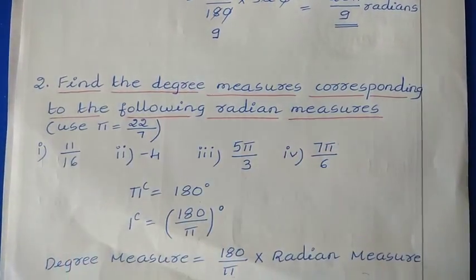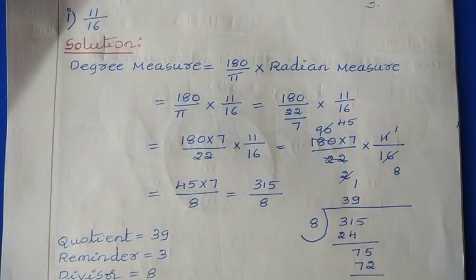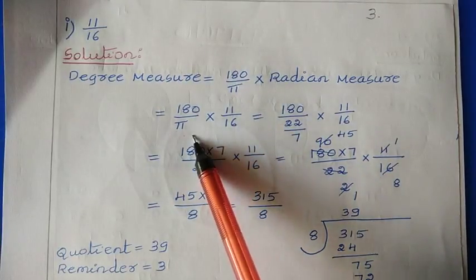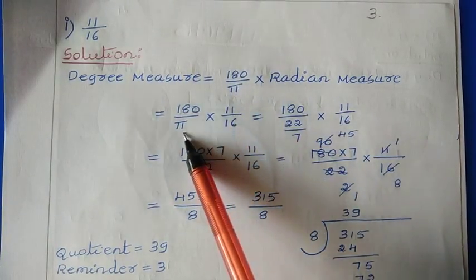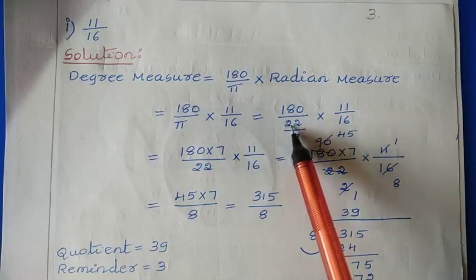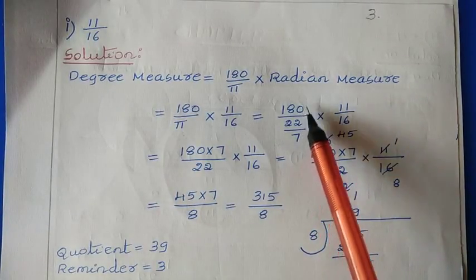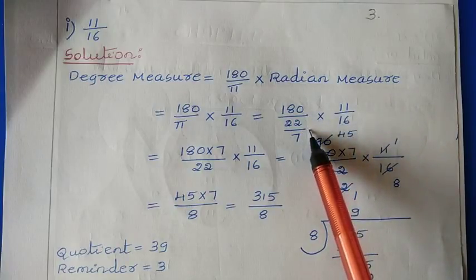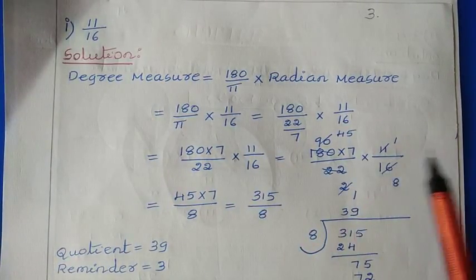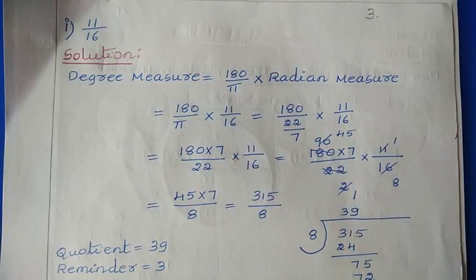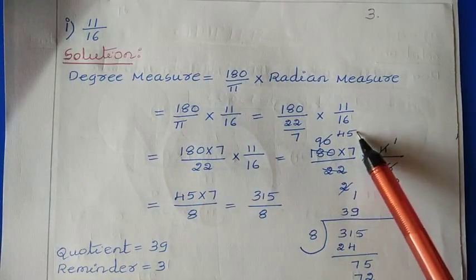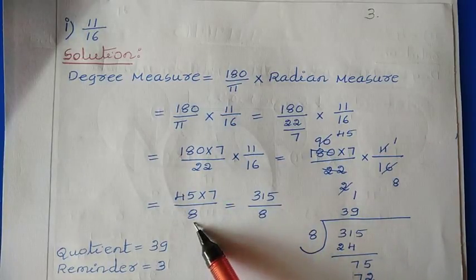First one: we have 11/16. The formula is degree measure = (180/π) × radian measure. So: (180/π) × (11/16). Since there is no π in 11/16, replace π with 22/7. So: 180 ÷ (22/7) × (11/16), which becomes 180 × 7 ÷ 22 × (11/16). Now perform the cancellations: 11 cancels with 22 giving 2, then 2 cancels with 180 giving 90, and 90 cancels with 16 giving factors leading to 45 × 7 divided by 8.